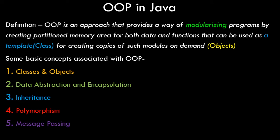Some basic concepts associated with object oriented programming are: classes and objects, data abstraction and encapsulation, inheritance, polymorphism, and message passing. We'll be covering all of them individually in separate video tutorials because each topic is substantial. We'll take both theoretical and practical explanations of each of these points in further video tutorials — this video is just a theoretical overview of object oriented programming.